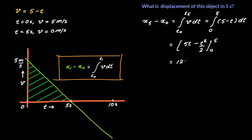And this, if you calculate, equals 12.5 meters. If you actually find the area under this straight line between 0 and 5 seconds, that would be half into base into height, which is equal to half times 5 times 5, that equals 12.5 units. You find that the area indeed is the change in position or displacement between 0 and 5 seconds.